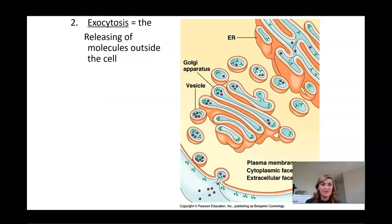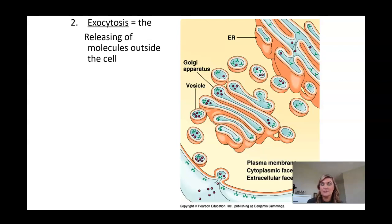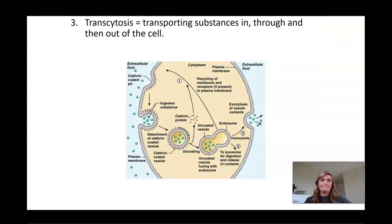Exocytosis is the opposite of endocytosis — it's the release of molecules outside of the cell. Proteins are made at the rough ER, go to the Golgi apparatus which modifies and sorts them, surrounds them with a vesicle, and sends them to the cell membrane where the vesicle membrane fuses and pushes the substance out. Transcytosis is transporting substances in, through, and then out of the cell — they come in one side, make a vesicle, travel through the cell, and get pushed out on the opposite side.